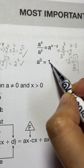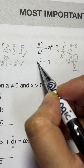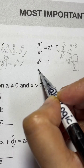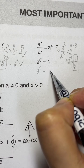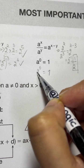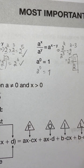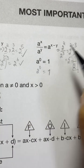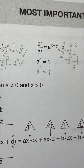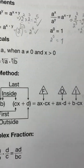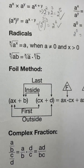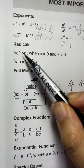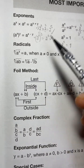A negative exponent is basically the reciprocal of that base. Also, a to the power of zero equals one — anything to the power of zero equals one. For example, two to the power of zero equals one, one hundred to the power of zero equals one. If you remember these main laws of exponents, you can solve any question.